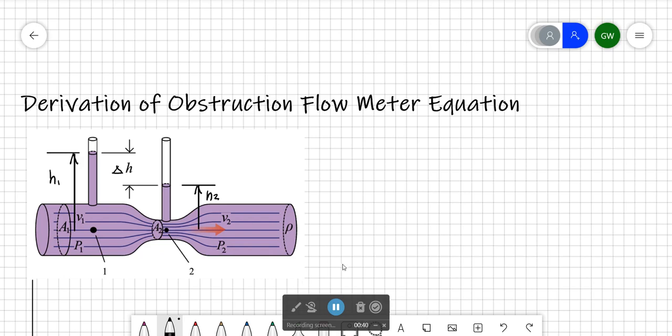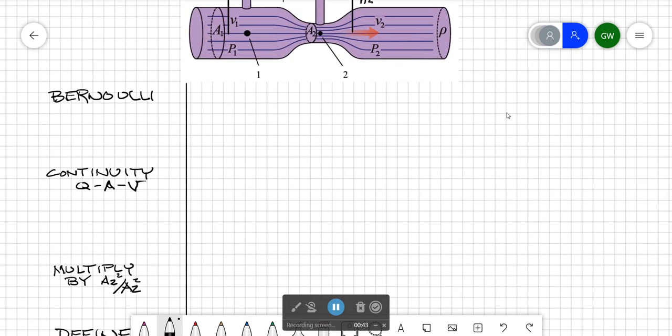Let's start with the Bernoulli equation. Our Bernoulli equation is p1 over gamma plus z1 plus v1 squared over 2g, and that equals p2 over gamma plus z2 plus v2 squared over 2g.